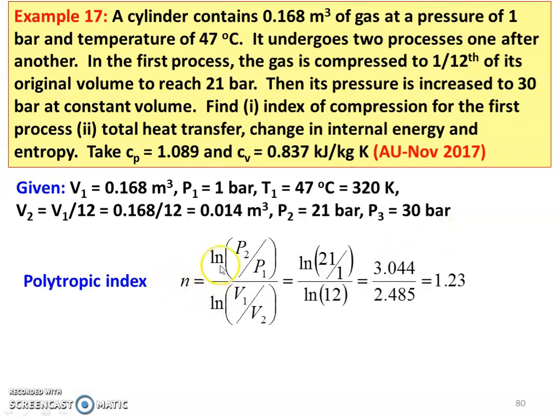Polytropic index N equal to logarithmic of P2 by P1 divided by logarithmic of V1 by V2, which is logarithmic of 21 by 1 divided by logarithmic of 12, V1 by V2 equal to 12, which is 3.044 divided by 2.485 equal to 1.23. N value, polytropic index equal to 1.23. Gas constant R equal to CP minus CV, 1.089 minus 0.837 equal to 0.252 kilojoules per kilogram Kelvin.